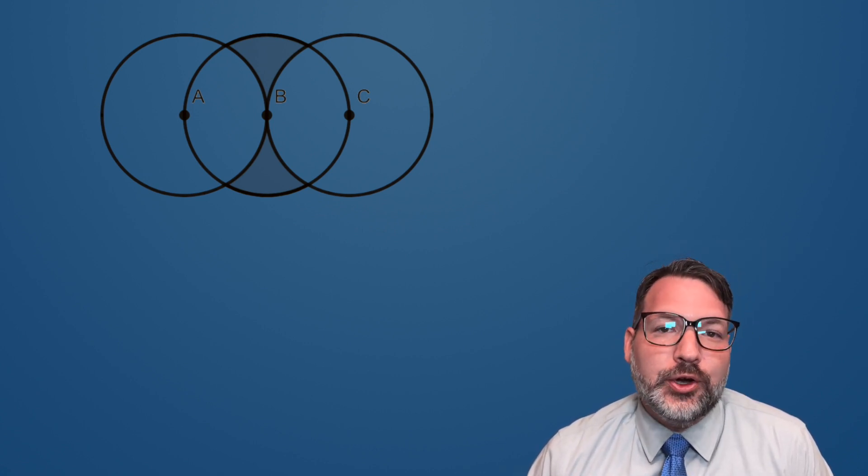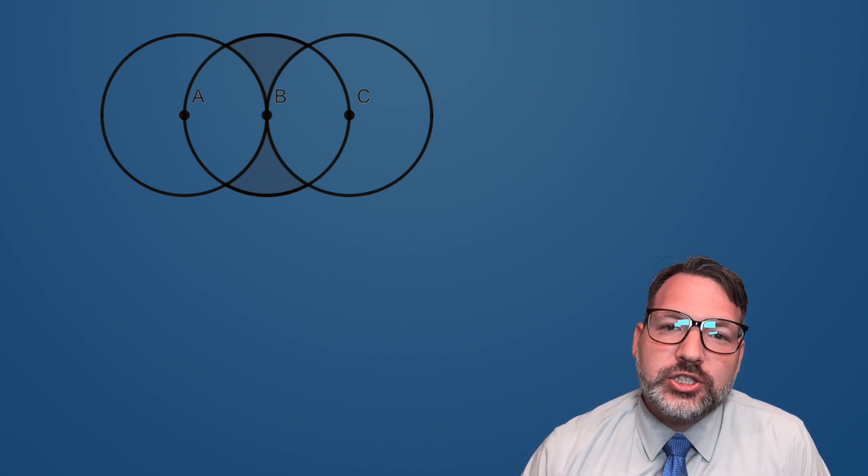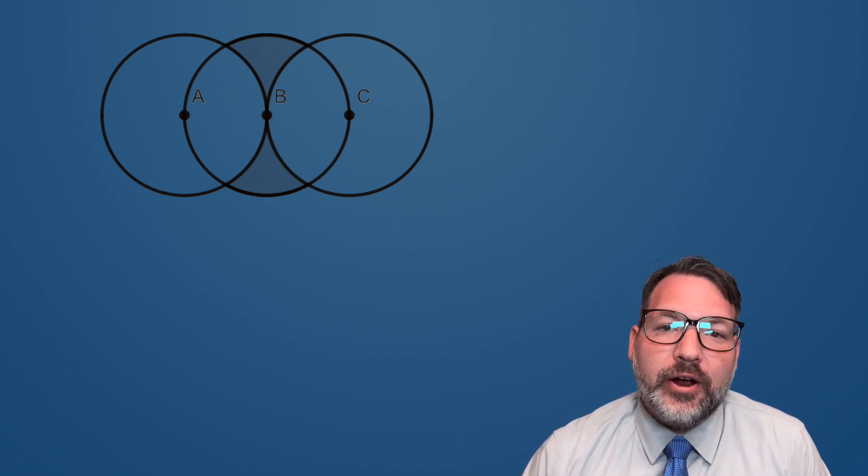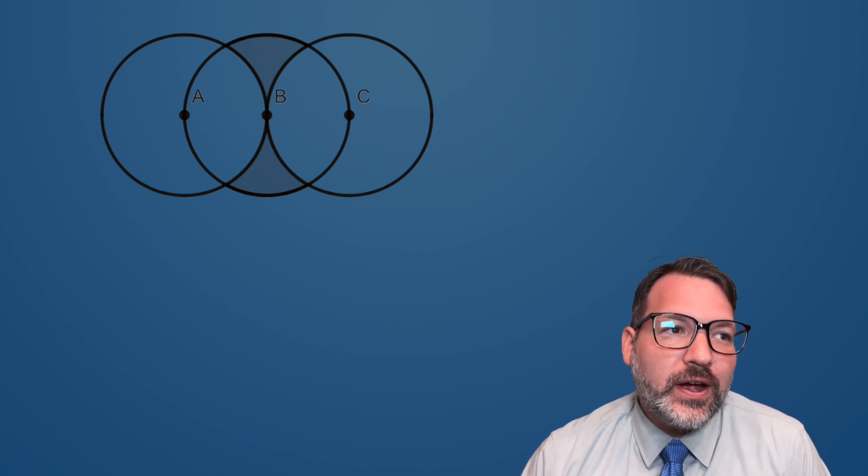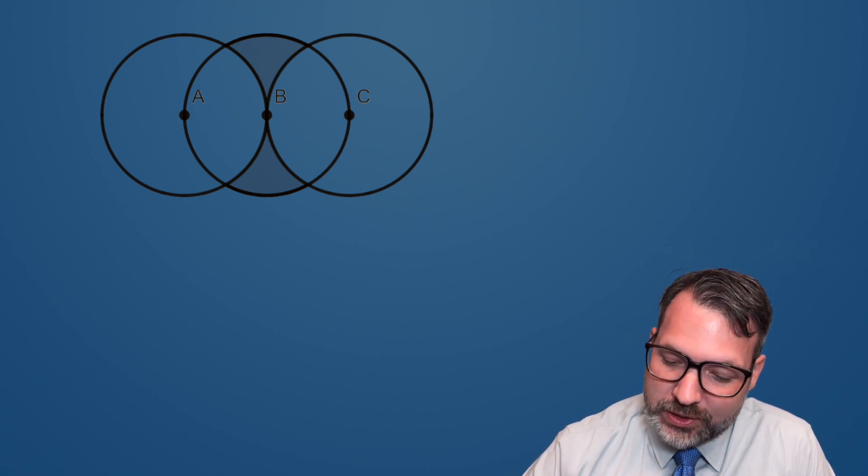which is obviously not a normal kind of shape. So I want to walk through how we would find the area of that shaded region, even if we didn't know, just randomly, something like the area formula for a lens, which would come in really handy here. In fact, that's probably the approach you've seen most often if you have seen other videos on this question.